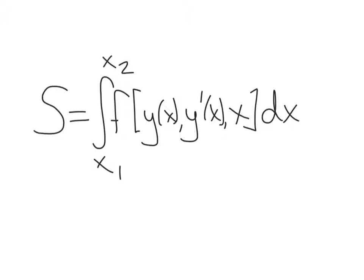Section 2 in this chapter introduces the Euler-Lagrange equation. The Euler-Lagrange equation gives us a way for solving for y as a function of x such that we can minimize an integral of this form. Here what we have is a functional f. f is called a functional because it is a function of functions. It can have a dependence on the function y, on y prime — the x derivative of y — and also on the independent variable x.